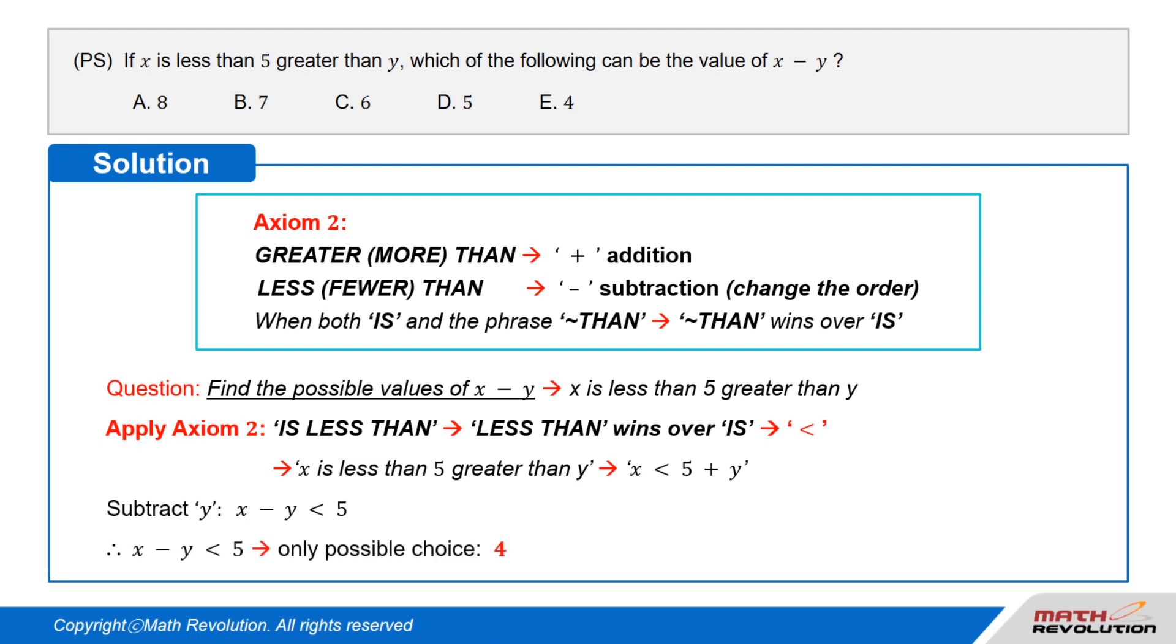Therefore, the value of x minus y has to be less than 5, and the only choice less than 5 is 4. So, E is the correct answer.